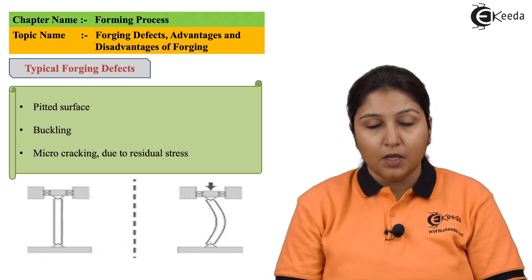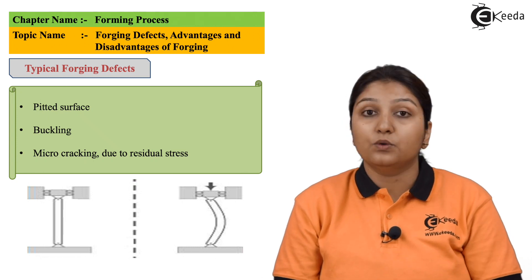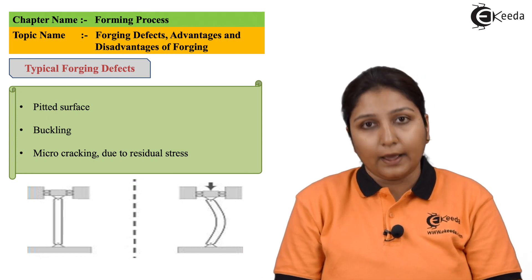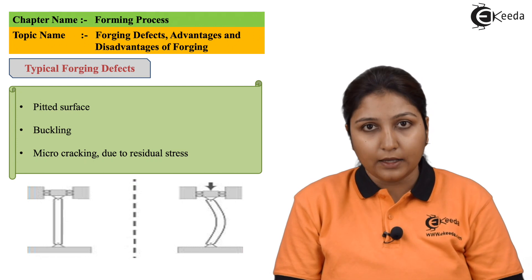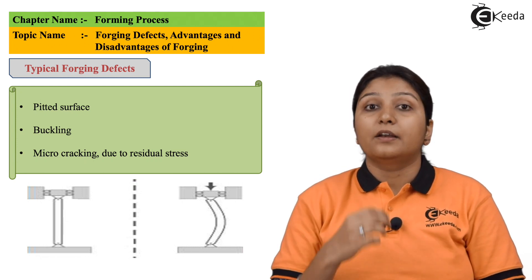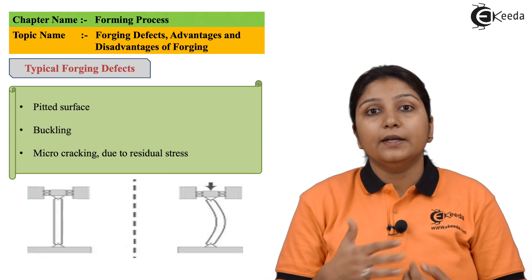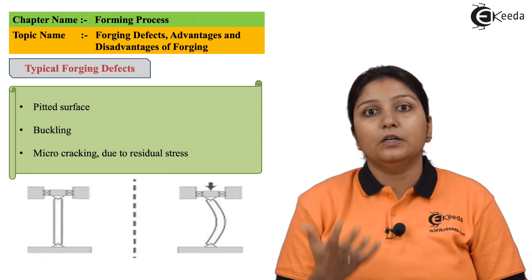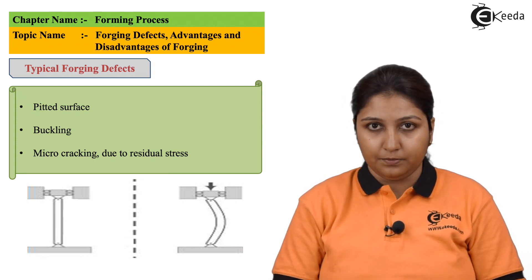The third kind of defect which you can see is micro cracking, that is internal cracks. It happens due to release of pressure and residual stresses which get induced in the object due to the application of pressure.